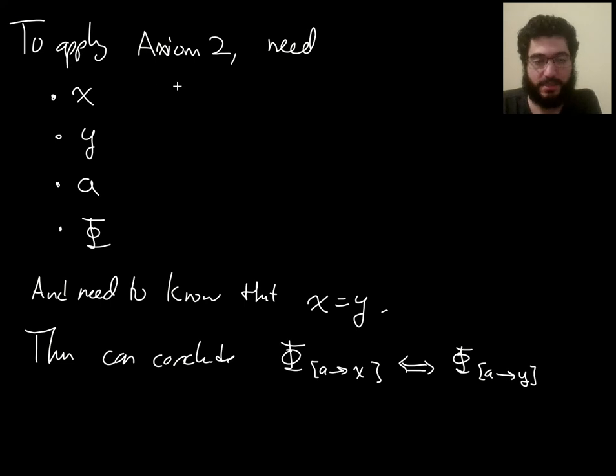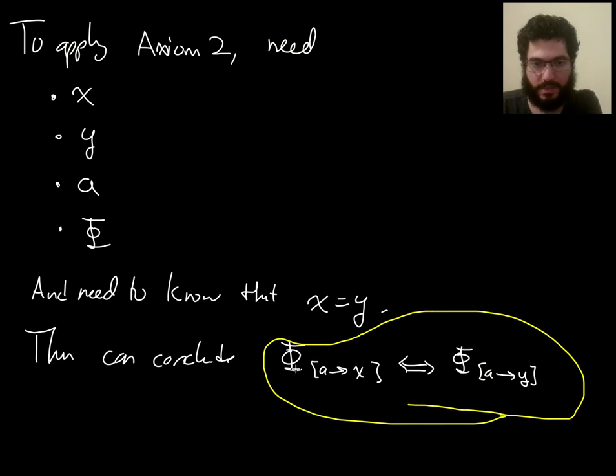So to apply axiom 2, you need something to play the role of x, something to play the role of y, something to play the role of a, and something to play the role of capital phi. And if you have things playing those roles, then you need to know that the thing you chose for x and the thing you chose for y are equal. And then axiom 2 gives you this conclusion, that your proposition that you chose for phi, if you take it and you replace the a by x, then it's equivalent to what proposition you would get if you took it and replace the a by y.